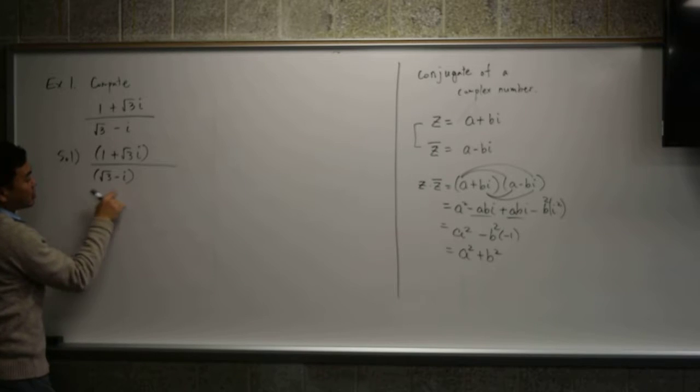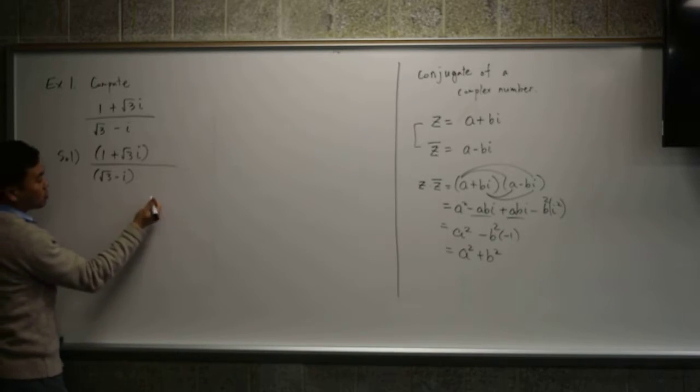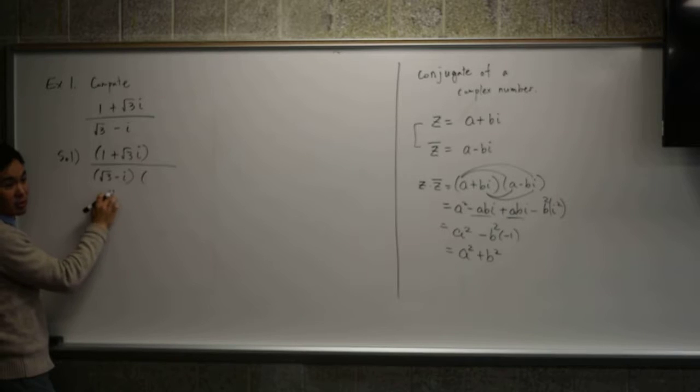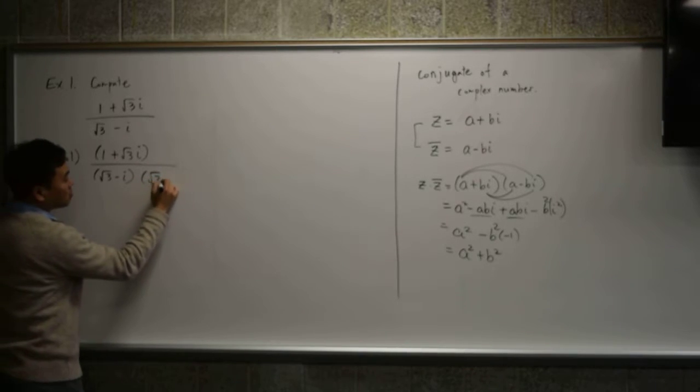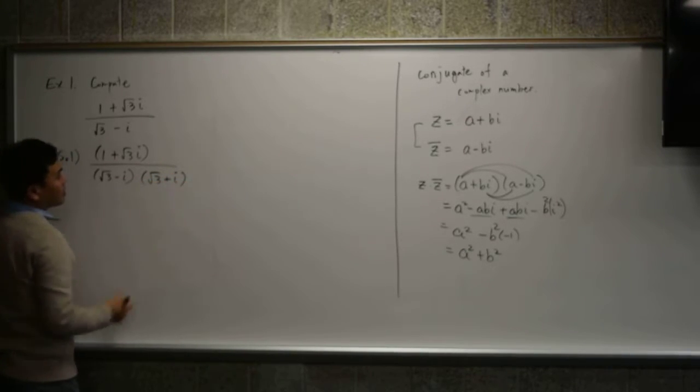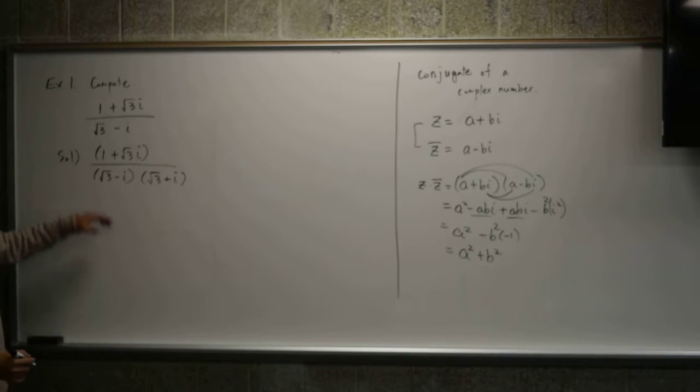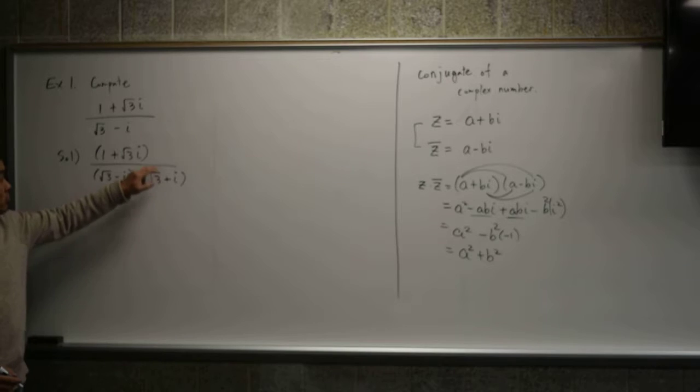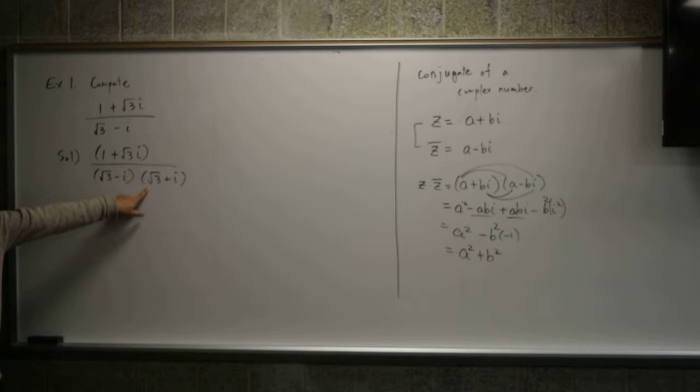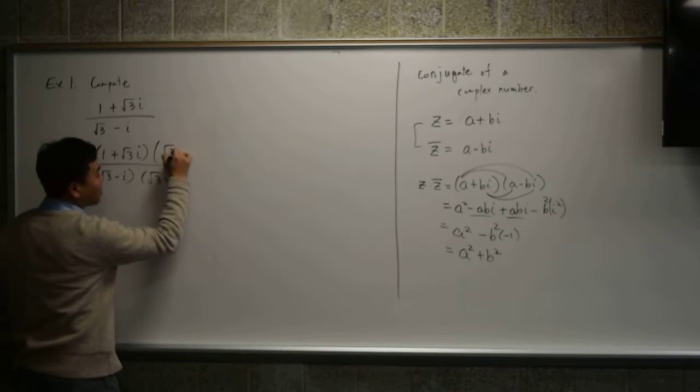Since the denominator is √3 minus i, you multiply the conjugate. What's the conjugate of this number? √3 plus 2... √3 plus i. Plus i, right. And I'm using the property that if you have a fraction, you're allowed to multiply whatever to top and bottom as long as you're multiplying the same thing. So since I'm trying to multiply √3 plus i in the denominator, I should also multiply the same thing on the top, √3 plus i.